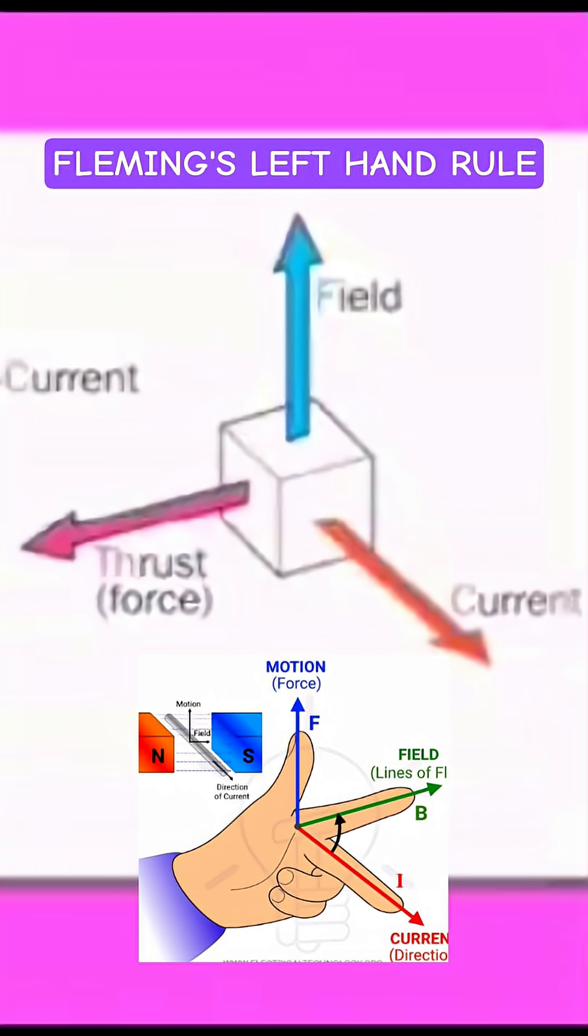Then if thumb indicates the direction of motion, first finger indicates the direction of external magnetic field, then second finger will indicate direction of conventional current. Now if the thumb and the first two fingers of the left hand are held at right angle to one another with the first finger...